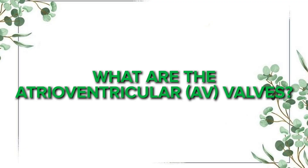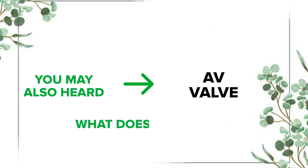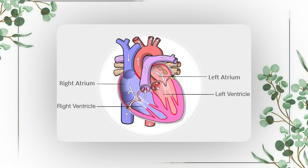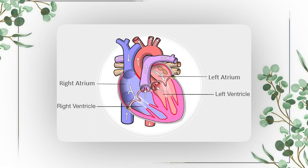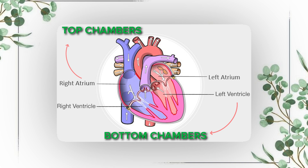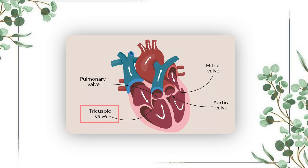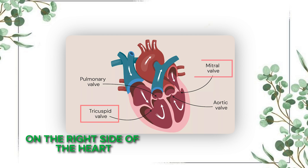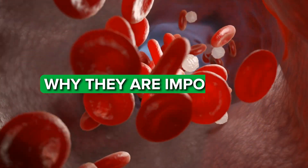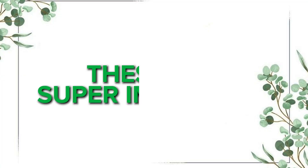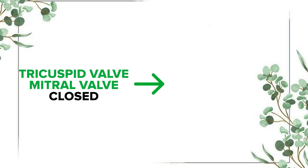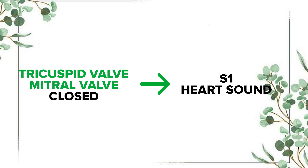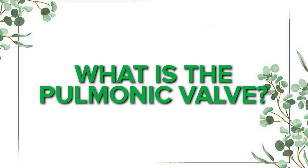What are the atrioventricular valves? You may have also heard the term AV valve, which means atrioventricular valve. These valves separate the atria — the top chambers — from the ventricles — the bottom chambers. They are the tricuspid valve, located on the right side of the heart, and the mitral or bicuspid valve, located on the left side of the heart. These are super important because when they close, they create the S1 heart sound, or 'lub.'